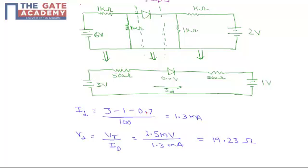3 minus 1 minus 0.7 divided by 100. By simplifying this, the Id value will be 1.3 milliamps.